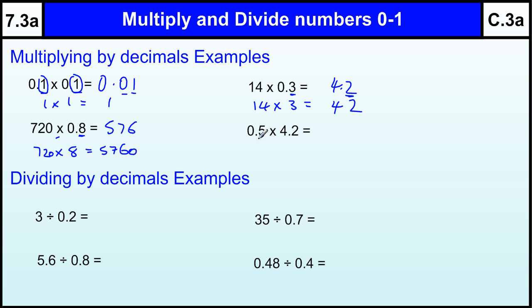And the last one, a decimal times a decimal, again ignore the decimals to start with, and just do 5 times 42. 5 times 2 is 10, 5 times 4 is 20, plus the 1 is 210. And then we've got 2 decimal places in the question, 2 decimal places in the answer, so the answer is 2.10, or 2.1.